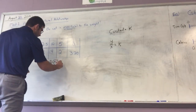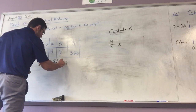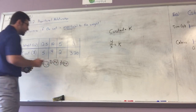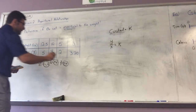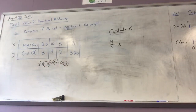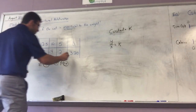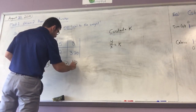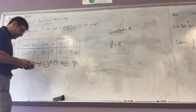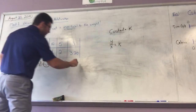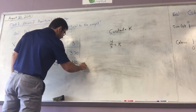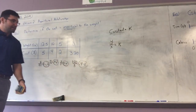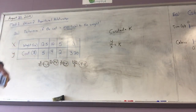2 divided by 5 still gives me a K value of 0.4. You should always check all of them to make sure they're constant, because problems will try to trick you by making some values different. Now 3.20 divided by 8 — when I do this it again gives me 0.4. So K equals 0.4 throughout, confirming the cost is proportional to the weight.